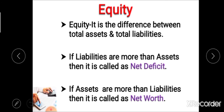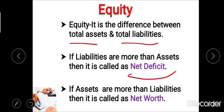After liability, the next component is equity. Equity is the difference between total assets and total liabilities — total assets minus total liabilities equals equity. If liabilities are more than assets, then we call it a net deficit, meaning equity is negative. If assets are more than liabilities, then it is called net worth, meaning the difference is positive. These are the three different components of balance sheet.